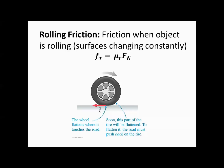We also have rolling friction, which we write as F sub R equals the coefficient of rolling friction times the normal force. Rolling friction happens for objects that turn, like wheels. They're not in constant contact with the surface like in kinetic friction where you're pushing a box. For rolling friction, each point on the wheel just touches the ground for a short time before the wheel turns to the next point. The result is that rolling friction is the smallest amount of friction.